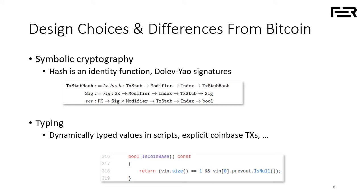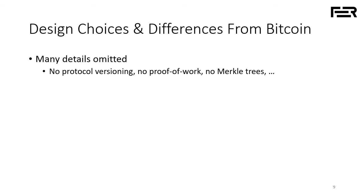Additionally, we use typing in many places where data is untyped in the original Bitcoin client. For example, stack values are just random sequences of bytes in Bitcoin; we use dynamically typed values in our scripts. Another example is the coinbase transaction, which is implicit in Bitcoin — a transaction is a coinbase transaction if it has only one input and that input is basically a hash pointer consisting of only zero bytes. For us, we have an explicit coinbase transaction type. We also omit many details from the Bitcoin client that we didn't consider crucial for verifying the desired properties — in particular, we're not interested in proof-of-work, so we omit related fields. We don't keep track of protocol versions, we don't have Merkle trees, and so on.